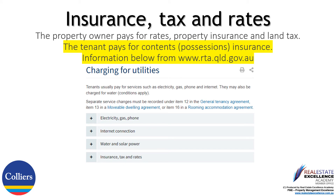During your tenancy, it is your responsibility to pay for your own contents and possessions insurance. Refer to the terms of the agreement in relation to electricity, gas, phone, internet, water, or solar power to ensure you are aware of all your responsibilities for connections of such services. The property owner pays for rates, property insurance, and land tax. Our agency strongly recommends that you ensure you have your own contents and possessions insurance.